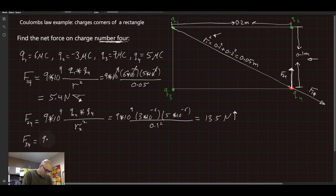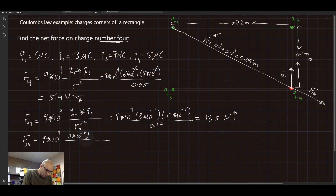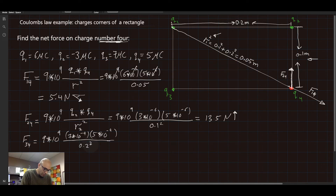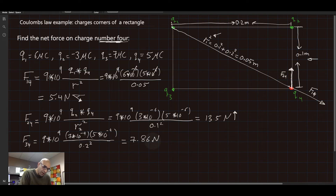For F3 on 4, using Coulomb's Law: nine times ten to the nine, times Q3 (seven times ten to the minus six) times Q4 (five times ten to the minus six), divided by R3 squared. Q3 and Q4 are separated by 0.2 meters, so R3 squared is 0.04. The calculation gives F3 on 4 equal to 7.86 Newtons. Since both Q3 and Q4 are positive, they repel — Q3 pushes Q4 away, so the force is directed to the right.